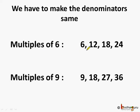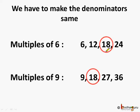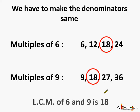Now what are the multiples of 6? They are 6, 12, 18, 24. And the multiples of 9 are 9, 18, 27, 36. Now out of these, which is the least common multiple? It is 18. So 18 is the LCM of 6 and 9.